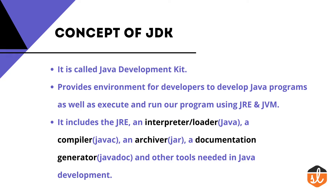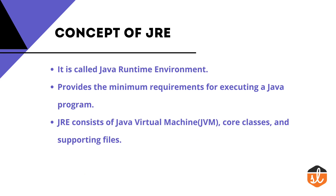JDK helps us in both aspects — development as well as execution. Whenever you download JDK in your system, you will see that JRE will also be downloaded alongside it. Now, JRE is the Java Runtime Environment. It provides the minimum requirements for executing a Java application. The minimum requirement to run any Java program is that JRE should be installed in your system. JRE consists of the Java Virtual Machine, core classes, and supporting files.